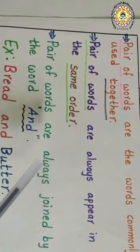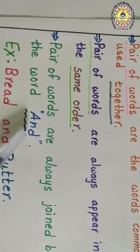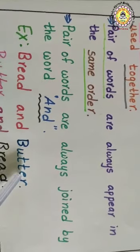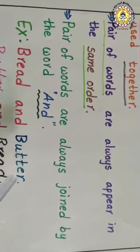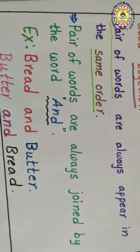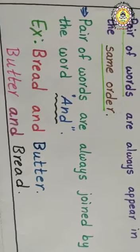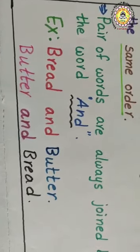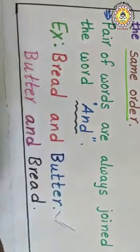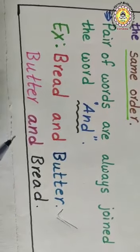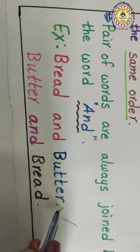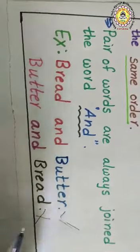Third point: pair of words are always joined by the word 'and' — A-N-D. For example, bread and butter. We join these two words with the help of 'and.' Pair of words always join with the word 'and.' Bread and butter — we use it in a particular order. We don't call it as butter and bread. We always call it as bread and butter. Bread and butter is the correct order; butter and bread is wrong.